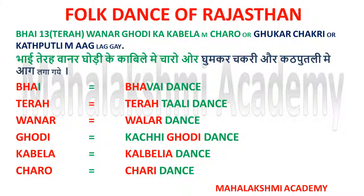Now let's see how it works. Bhai stands for Bhavai dance, Tera stands for Tera Tali dance, Wana stands for Walar dance, Ghodi stands for Kachi Ghodi dance, Kabila stands for Kalbelia dance, and Charo stands for Chari dance. We will discuss the next group — ghoom kar chakri aur katputli mein aag laga gaye — in the next slide.